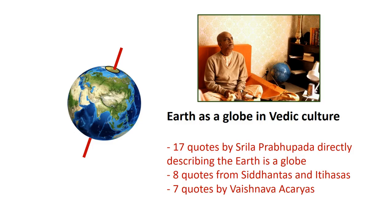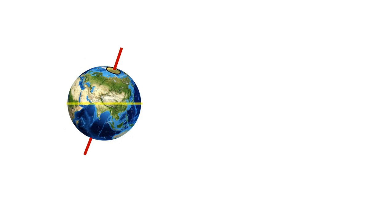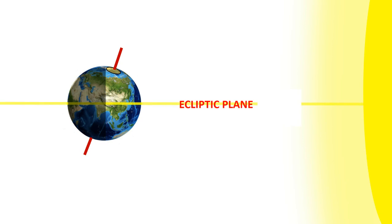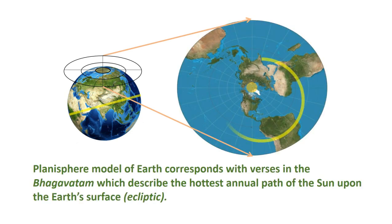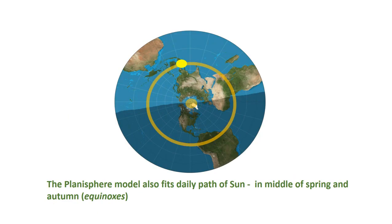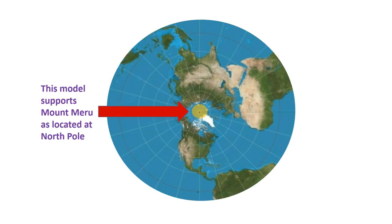Third model: the earth plane in stereographic projection. The earth as a globe in Vedic culture has a lot of support — there are 17 individual quotes by Srila Prabhupada directly describing the earth as a globe, eight quotes from the Siddhantas and Itihasas, and at least seven quotes from the Vaishnavacharyas. Adding the ecliptic plane — the direct line between the sun and the earth where the sun hits the surface at its hottest point — and turning the earth into stereographic projection makes it a planisphere model, which corresponds with verses describing the hottest annual path of the sun and the daily path during the equinoxes. This model supports Mount Meru as located at the North Pole.